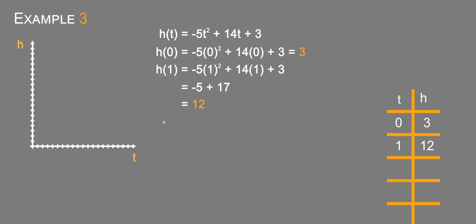h(3), so at 3 seconds we have -5(3)² + 14(3) + 3. That equals 3 squared is 9 times -5 is -45 plus 42 plus 3, which equals -45 + 45, which is 0. So at 3 we're at a height of 0.